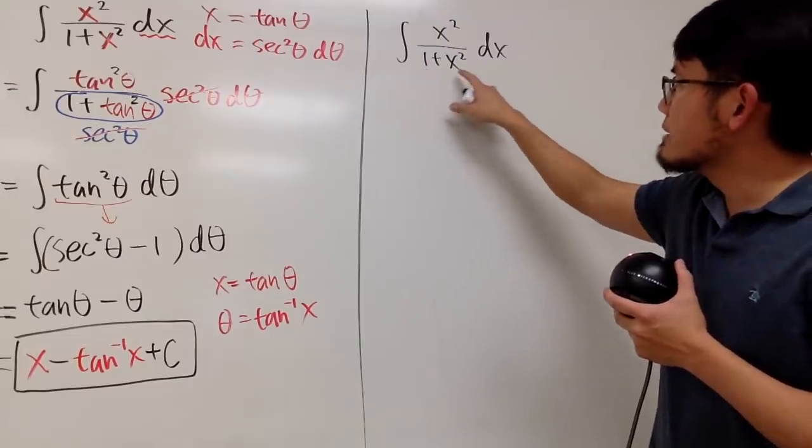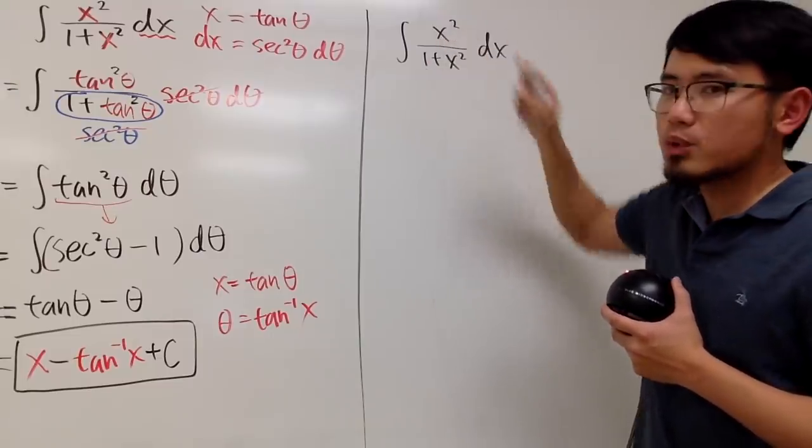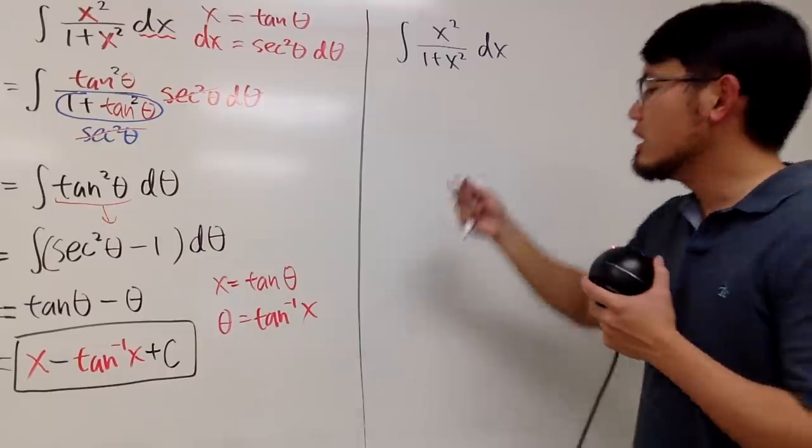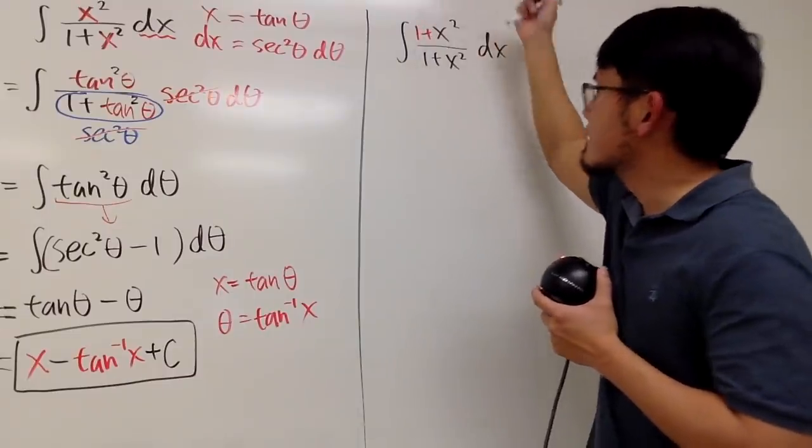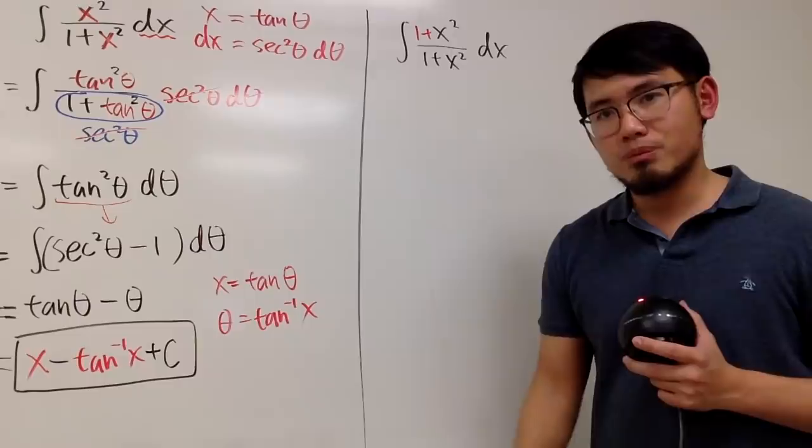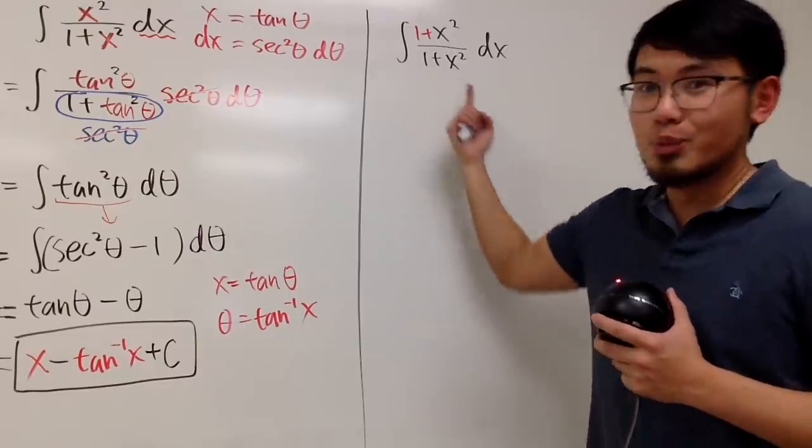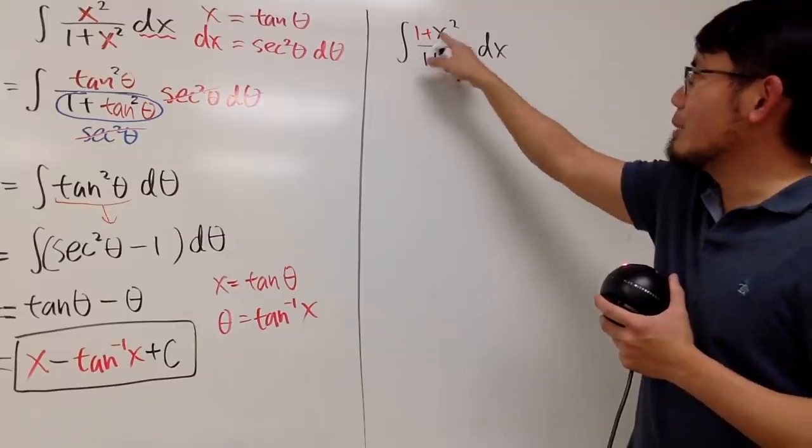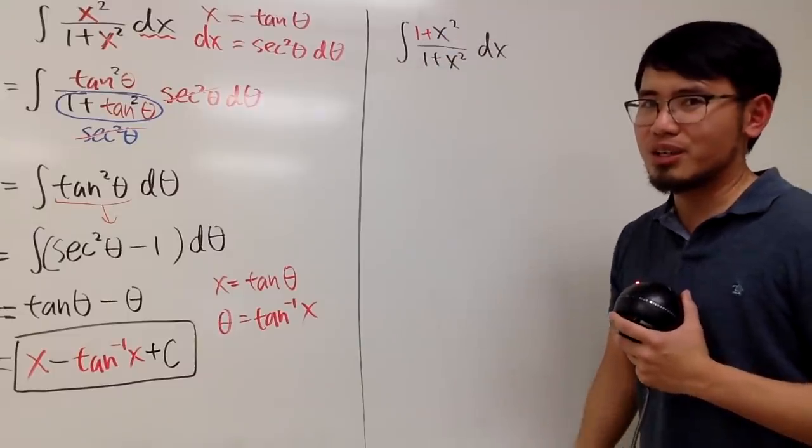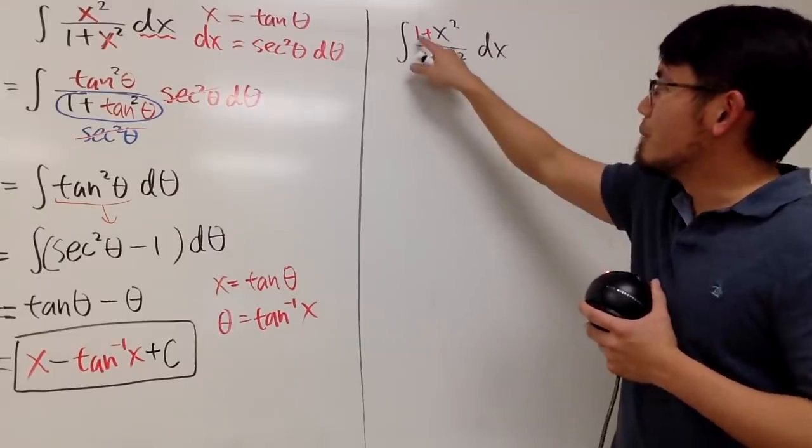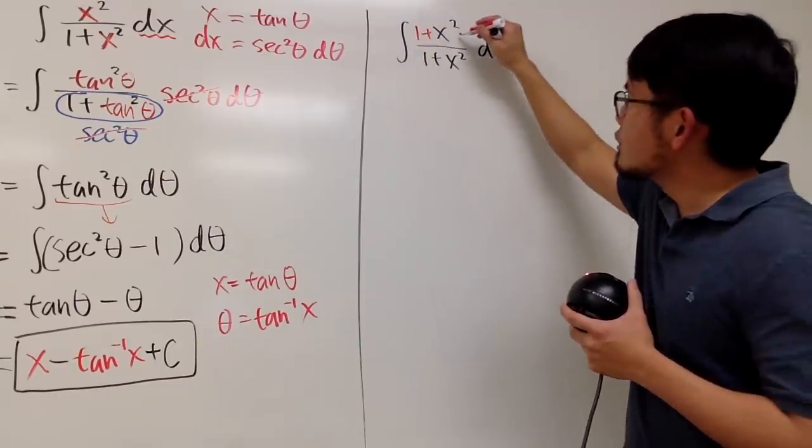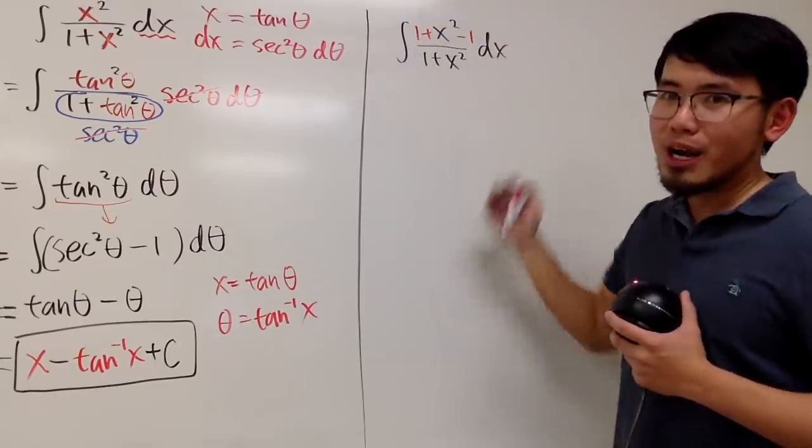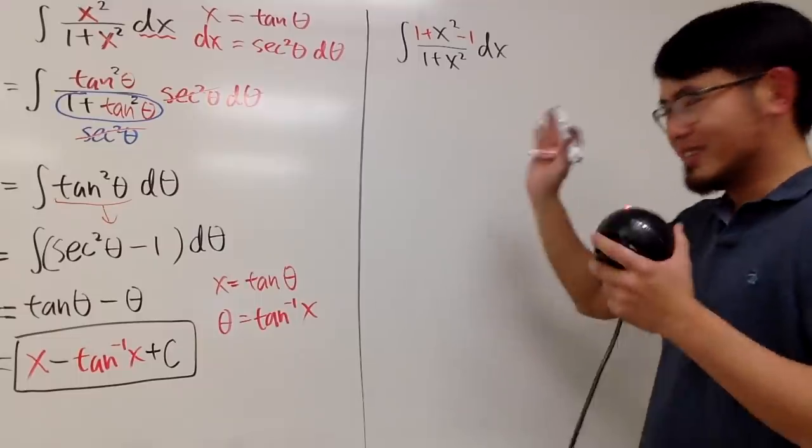On the bottom, we have 1 plus x squared. On the top, we only have x squared. Wouldn't it be nice if the top happens to be 1 plus x squared as well? Yeah, this is just 1. This is really nice, isn't it? But however, if you just put a 1 plus right here, you change the whole thing. That's no good. However, when you add 1, just make sure that you subtract 1 after that. Then it's okay. You didn't change anything. You can pretend that you didn't do anything.